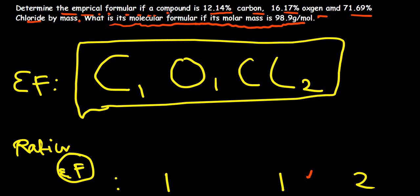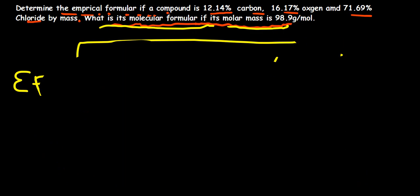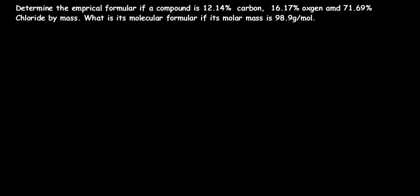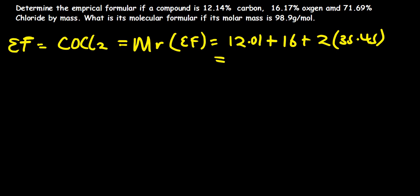The next part asks: what is the molecular formula if its molar mass is 98.9 grams per mole? Remember, we need the factor. Our empirical formula is COCl₂. We can add the atomic masses to find the molar mass of this empirical formula: 12.01 plus 16 plus 2 multiplied by 35.45.